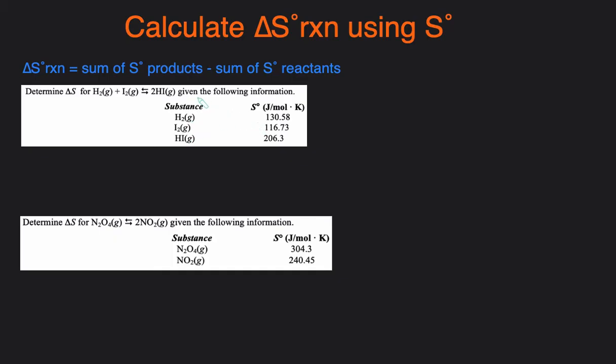Now that we have the values, we can just plug in products minus reactants. The delta S of this reaction will equal the sum of the products. We have two moles of HI, so we take two and multiply it by the value for HI, which is 206.3.